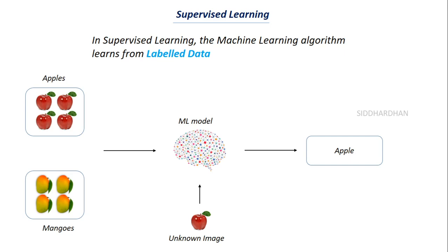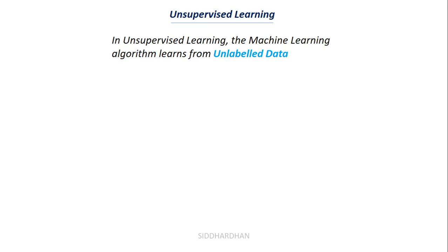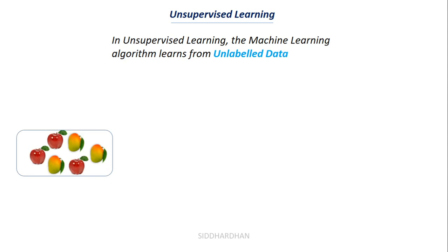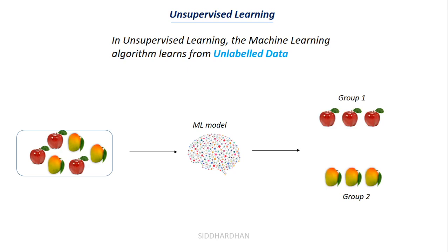In unsupervised learning, the machine learning algorithm learns from unlabeled data — we don't tell it what the data represents and give no labels. Using a similar example, we feed several images of apples and mangoes to the model without telling it which is which. The model tries to find patterns and groups the images — all apples end up in one group and all mangoes in another. When you give a new image it tells you whether it belongs to group one or group two. This is called unsupervised learning because we give no supervision in terms of labels.